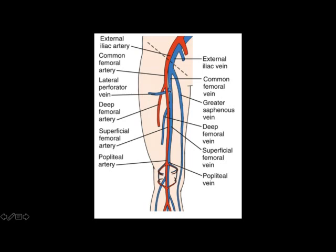The next branch off the common femoral vein is the lateral perforator vein, which moves laterally as its name would suggest between the superficial and deep femoral arterial branches. This then continues along until the next point of bifurcation, where it gives rise to the superficial femoral vein, which courses superficially beside the superficial femoral artery, and the deep femoral vein, which moves deeper inside the thigh compartment.